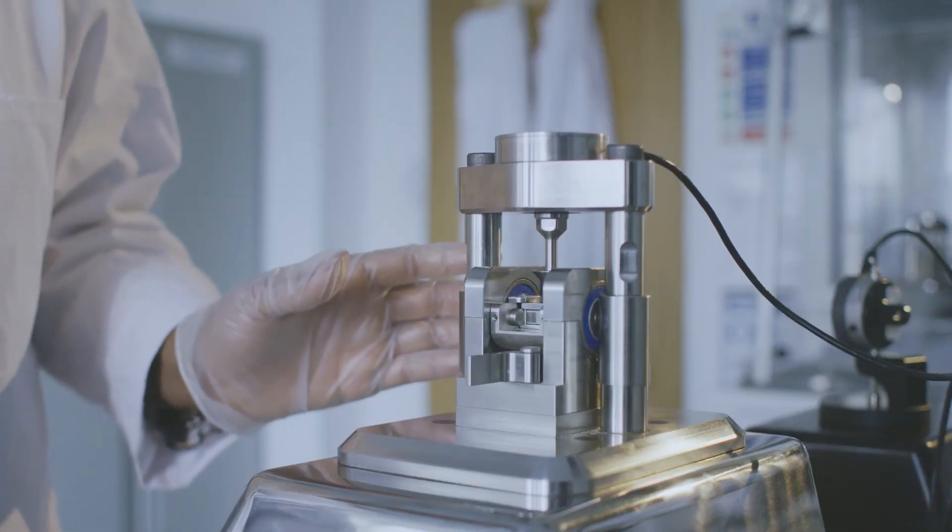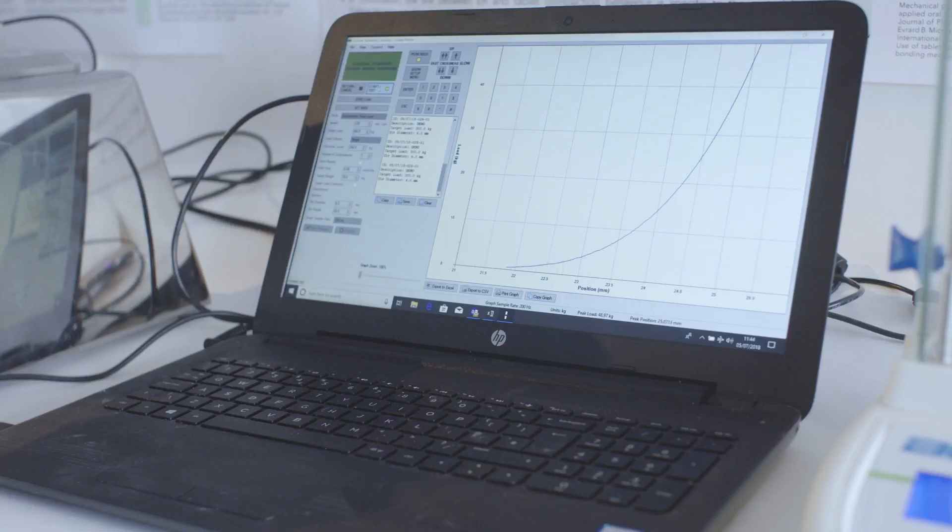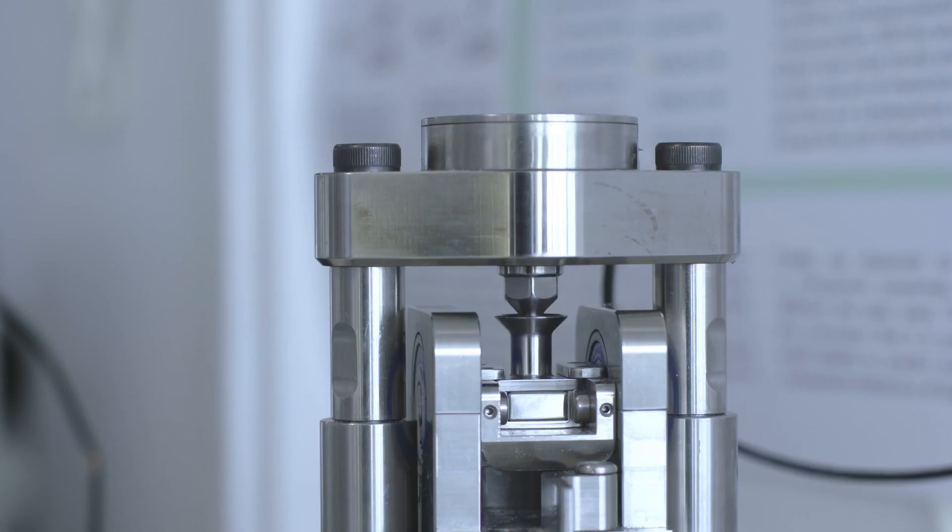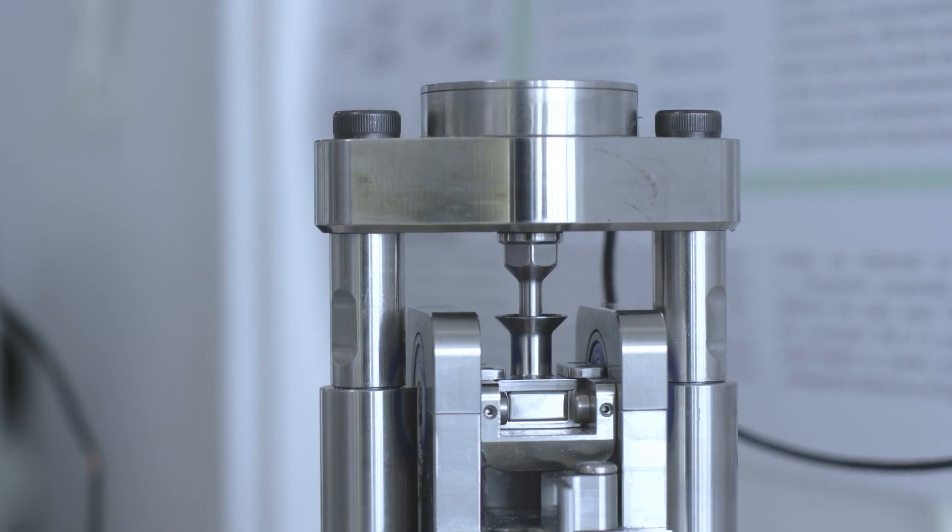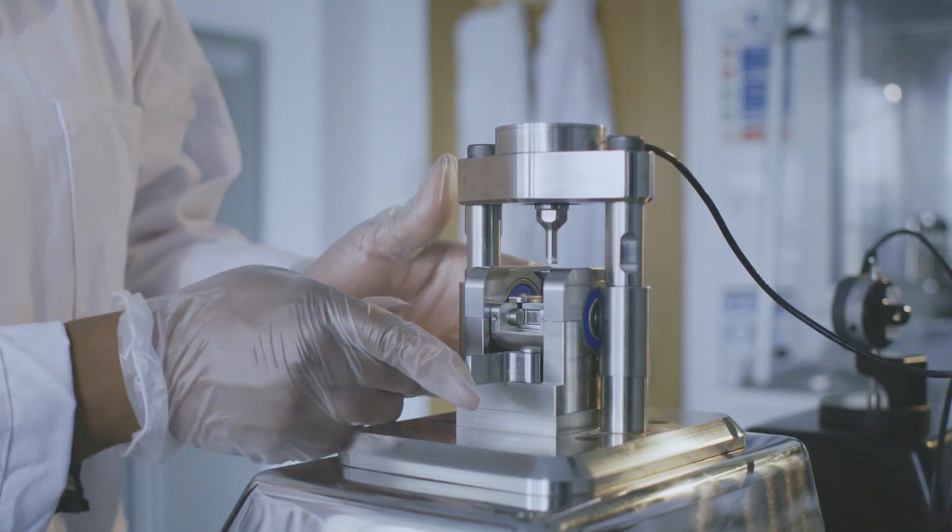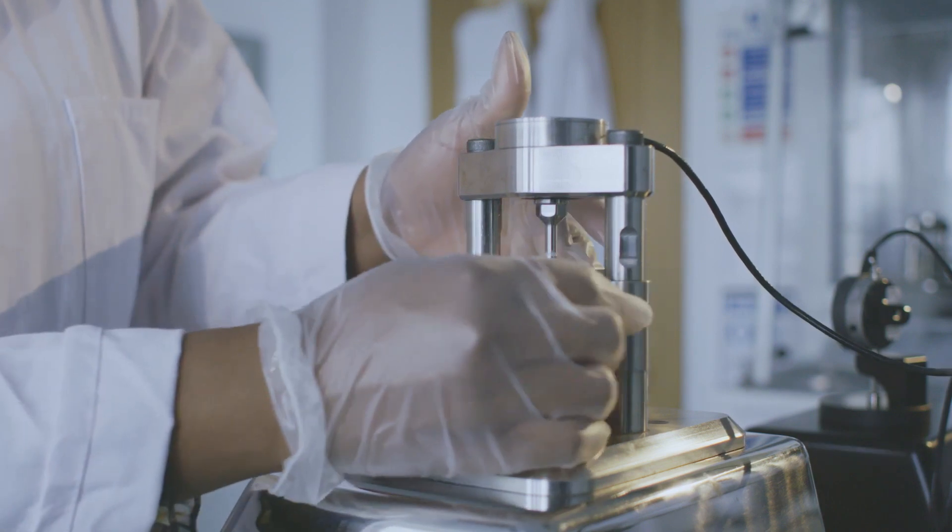The Gamlin system tests the compaction properties defined by the new USP1062 Tablet Compaction Characterization Monograph, as well as checking the lubrication and the elastic properties of the sample.